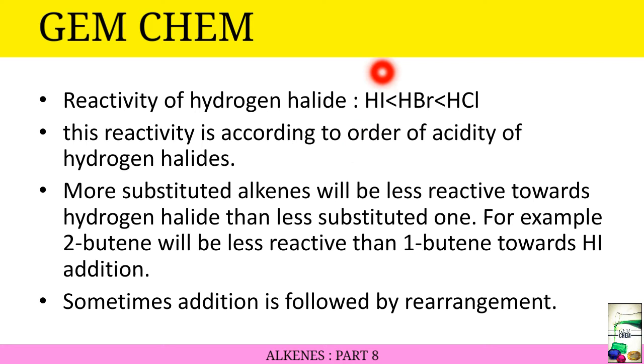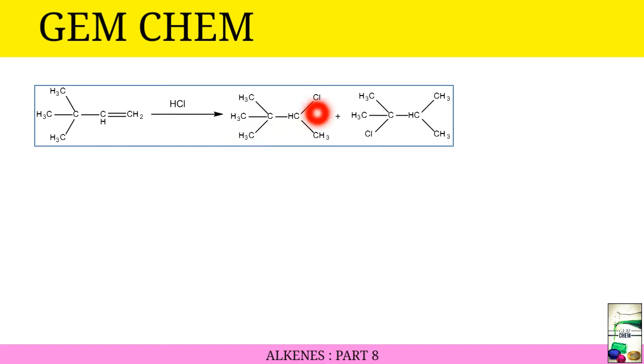Sometimes addition is followed by rearrangement, and we will see an example. In this example, this product is a normal product. The substitution has occurred. But in this case, the product is abnormal. Why? There is a rearrangement occurring. The CH3 from this carbon has been removed to this one. So we will see how the rearrangement takes place.